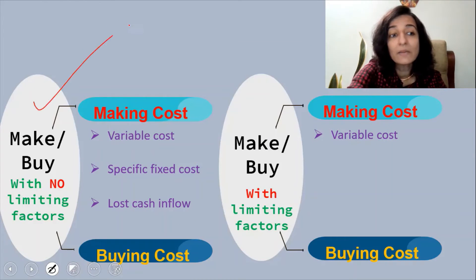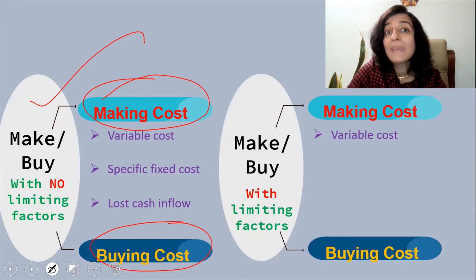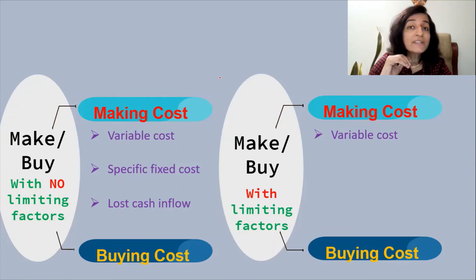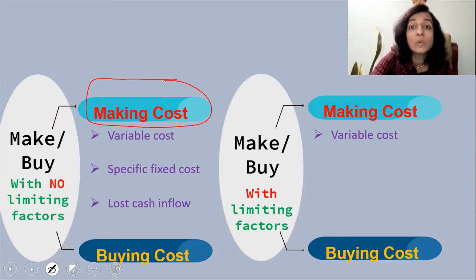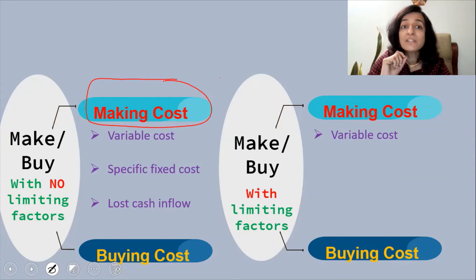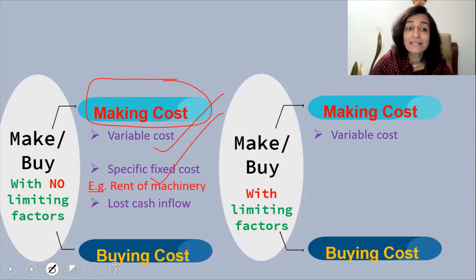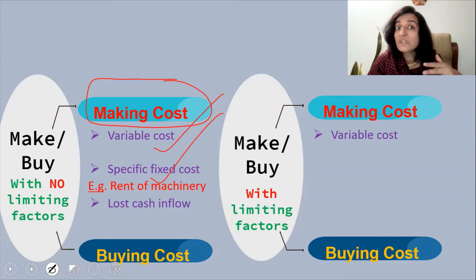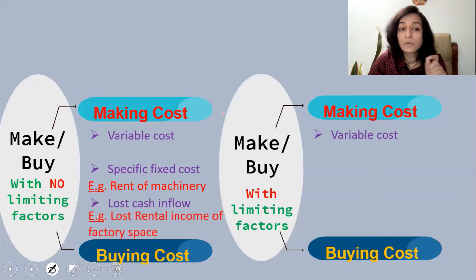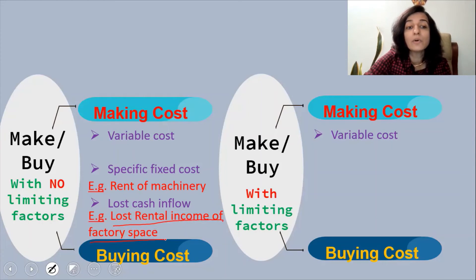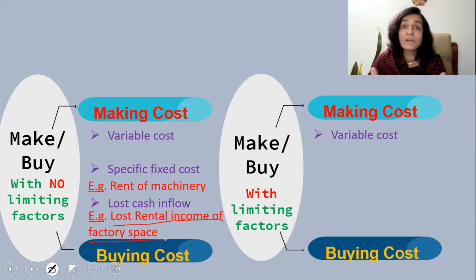The principal difference is: in make or buy with no limiting factors, we do not know whether making or buying is cheaper — we are trying to find it out. So we include all additional expenses incurred if we decide to make: the variable cost, the specific fixed cost such as machinery rental, and the lost cash inflow such as lost rental income of factory space. If we decide to make the component, we cannot let out the factory space, so we lose that rental income — lost cash inflow is always relevant.